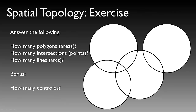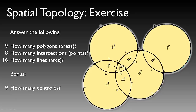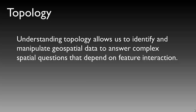Consider this exercise. Pause the video and identify how many polygons or areas you can see in the figure, how many intersections or points — meaning how many different places do lines cross one another — and how many lines or arcs you see within the diagram. As a bonus, how many centroids or centers of polygons can you find? The answers: nine polygons, eight intersections, 16 lines or arcs, and nine centroids.